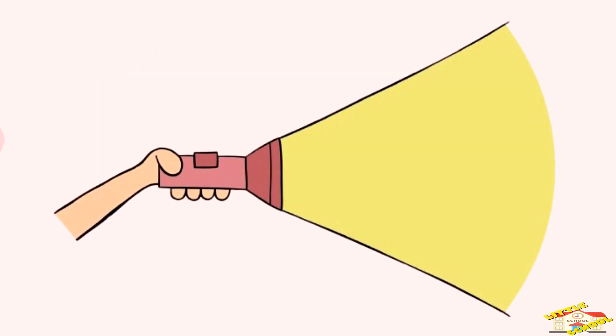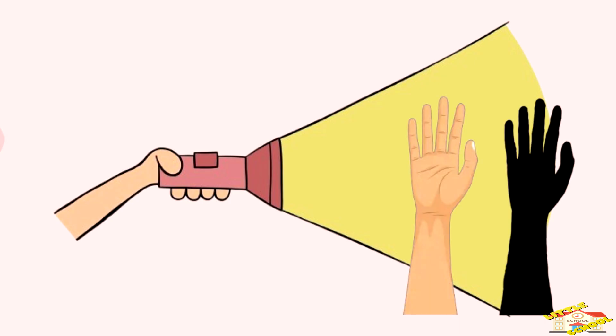Let's try another example. If you hold your hand under a flashlight, you'll see a shadow of your hand on the wall or table. That's because your hand is blocking the light from reaching that spot.